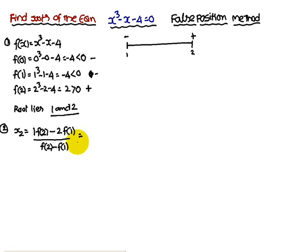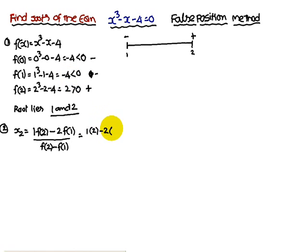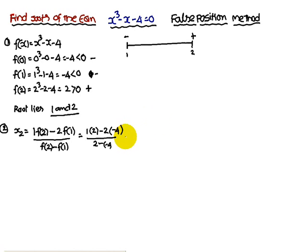Substituting the values: f(2) = 2 and f(1) = -4. So x₂ = (1×2 - 2×(-4)) / (2 - (-4)) = (2 + 8) / 6. Simplifying, you get x₂ = 1.366.